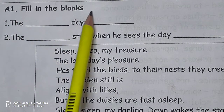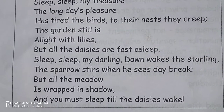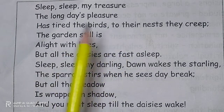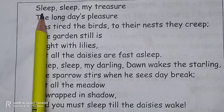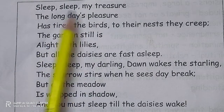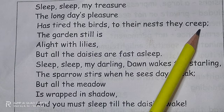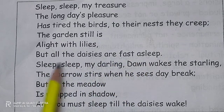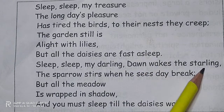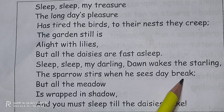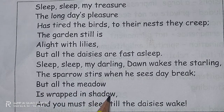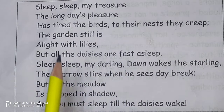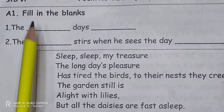First in our notes is A1: Fill in the Blanks. First, students, we have to read the poem. Sleep, sleep my treasure, the long day's pleasure has tired the birds, to their nest they creep. The garden still is alight with lilies, but all the daisies are fast asleep. Sleep, sleep, sleep my darling. Dawn wakes the starling. The sparrow stirs when he sees the daybreak, but all the meadow is wrapped in shadow, and you must sleep till the daisies wake.